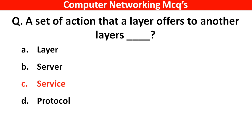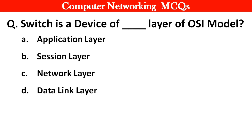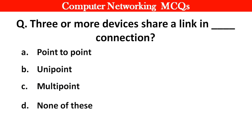Next question: A set of actions that a layer offers to another layer — right answer is option C: Service. Next question: Switch is a device of which layer of the OSI model? Right answer is option D: Data Link Layer. Next question: Three or more devices share a link in — right answer is option C: Multipoint.